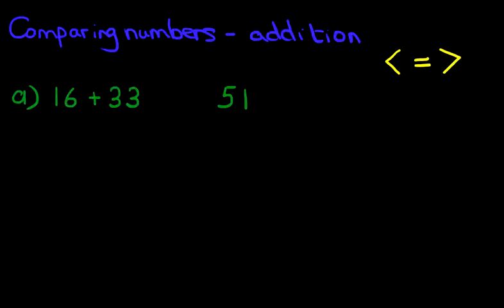Well, the first stage is to do the addition on the left. So 16 plus 33. Now you should know how to do this by now, but we'll go through it again. How many tens are there? There's one over there and there's three over here. One plus three is four. So that's 40.